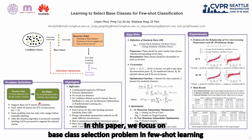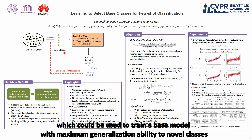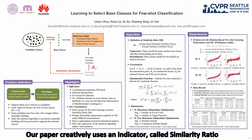In this paper, we focus on the base class selection problem in few-shot learning. We aim to select a fixed number of base classes from a broad set of candidate classes, which could be used to train a base model with maximum generalization ability to novel classes.